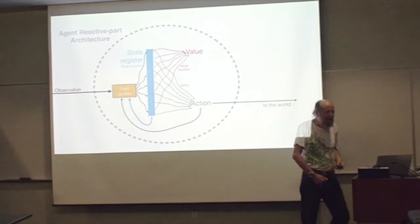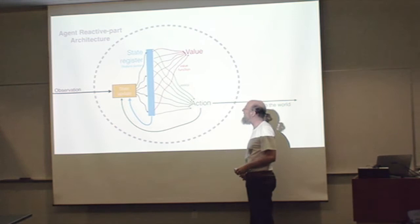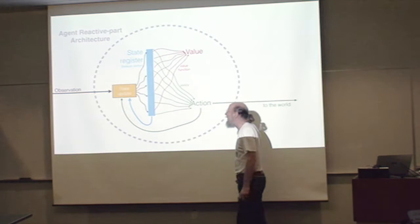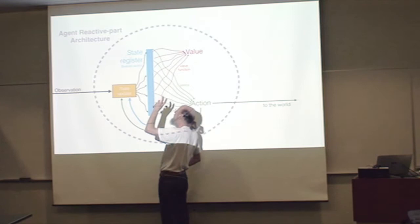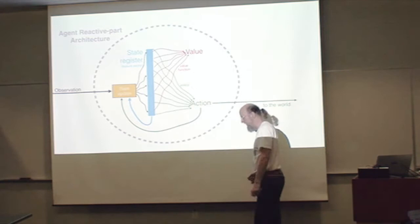That's the reactive part of the mind. The biggest thing I want you to think is, at the center of this is the state register. There's some machinery for updating the state register - a big vector of features representing where I am. It's then used to do the most important things we need to do.